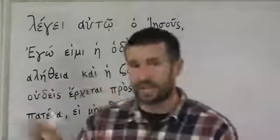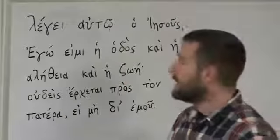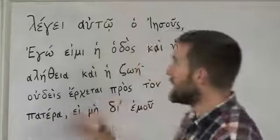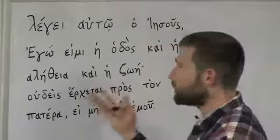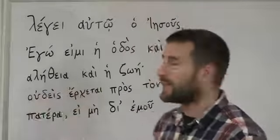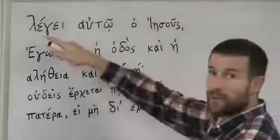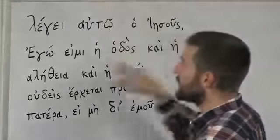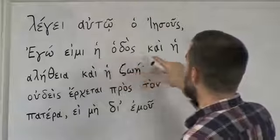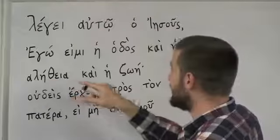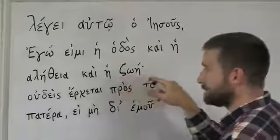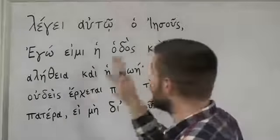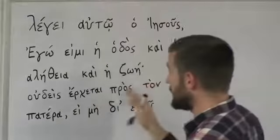It's great to learn a verse like this in Greek if you're an absolute beginner, because it's a verse you probably already have memorized in English. If you forget what a word means, it'll come to you right away just by thinking about the English. So let's go back to the beginning: legei autō ho Iēsous, egō eimi hē hodos, kai hē alētheia, kai hē zōē. That's the first part — 'Jesus saith unto him, I am the way and the truth and the life.'